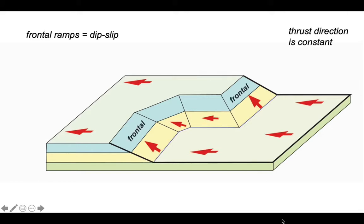First, there are two segments where the thrust displacement is dip slip. These are called frontal ramps. There's another part where the slip on the ramp is strike slip - lateral ramps. And then there's a part in between frontal and lateral - oblique ramps where the slip is oblique. The thrust direction is constant; it's the orientation of the ramps that change to create this three-dimensional fault surface.